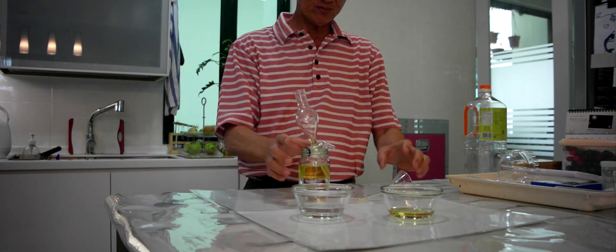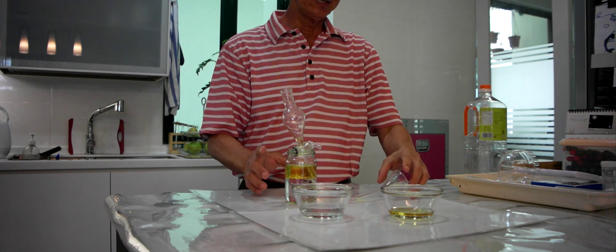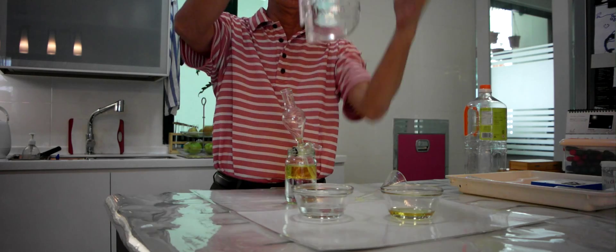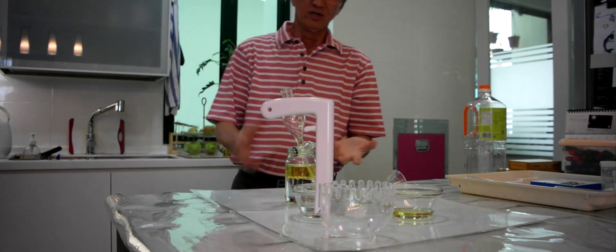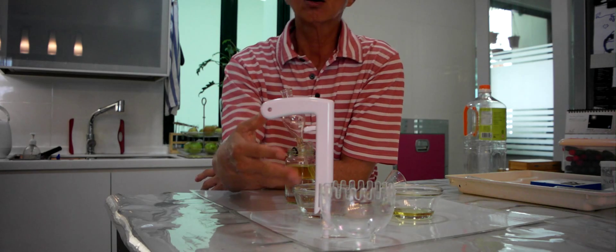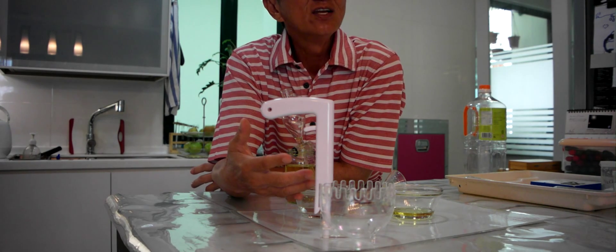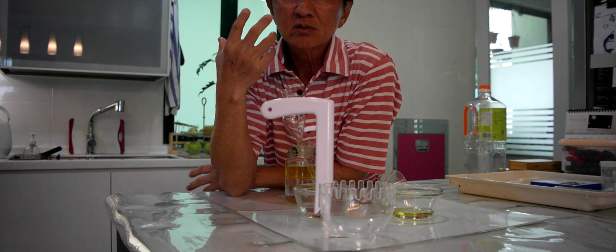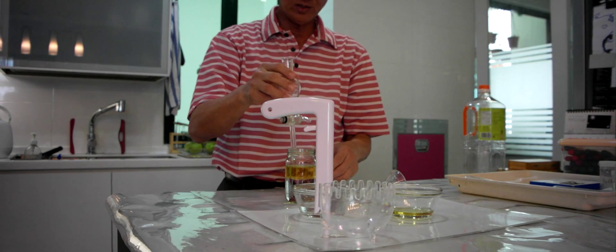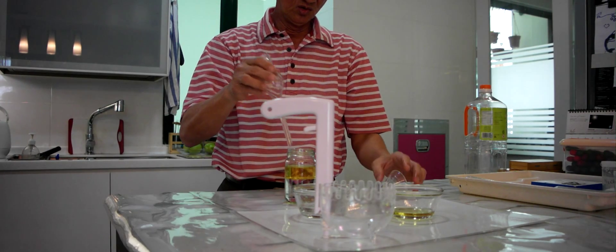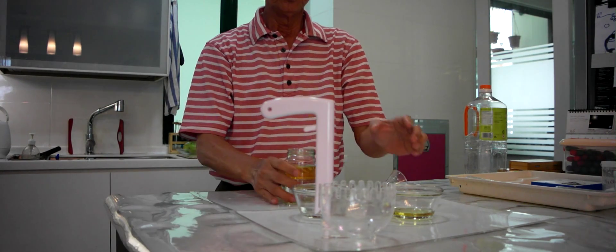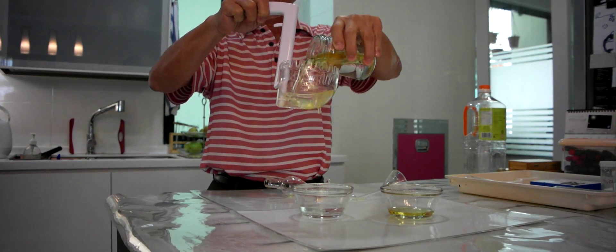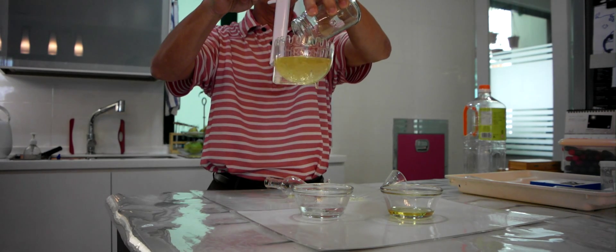Now I have a separating funnel that is made for housewives. This is a separating funnel made for housewives. Now suppose your soup has a lot of oil. That's not very healthy. You want to get rid of the oil. This is what you can do. So now I have the soup with a lot of oil.